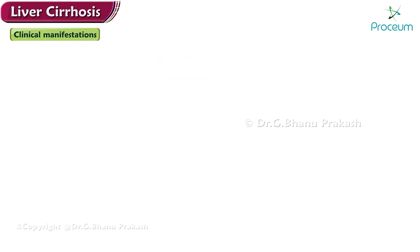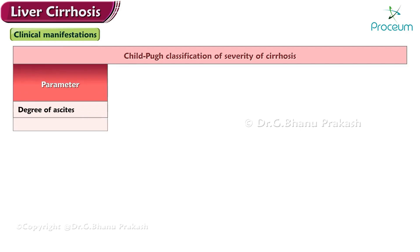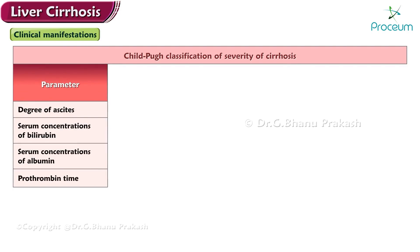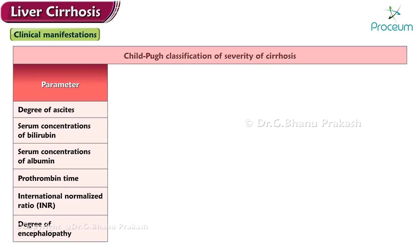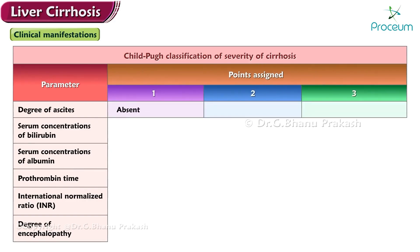Next, we'll learn about the Child-Pugh classification of severity of cirrhosis. The modified Child-Pugh classification of the severity of liver disease is according to the degree of ascites, the serum concentrations of bilirubin and albumin, the prothrombin time, the international normalized ratio, and the degree of encephalopathy. For the ascites parameter: one point if absent, two points if slight, and three points if moderate.